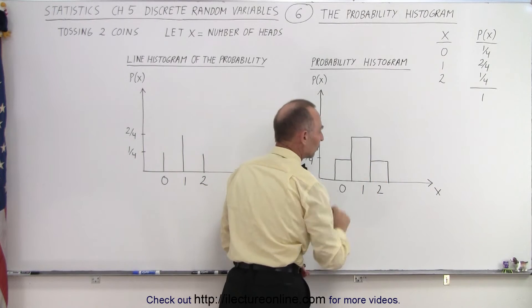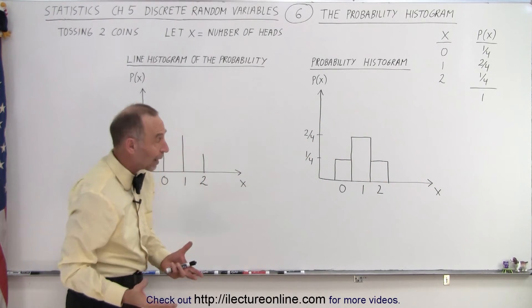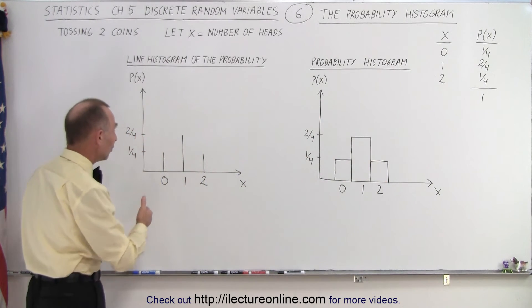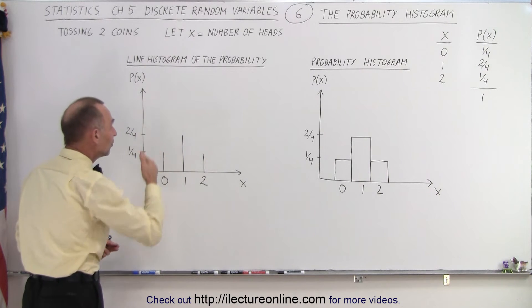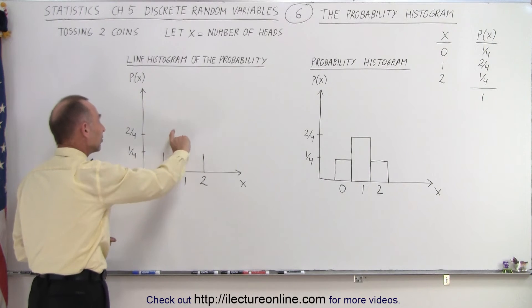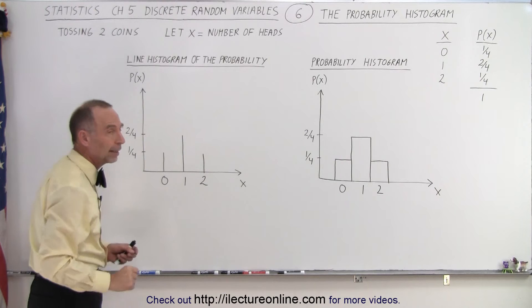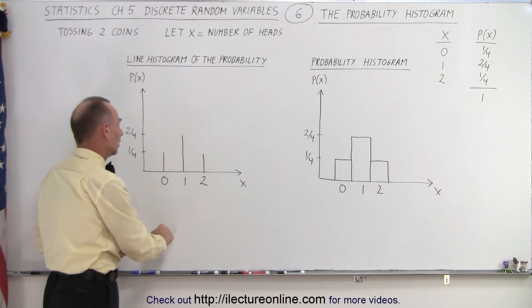Sometimes we see something that looks like this, where we have vertical lines. You can see again that the height of each line corresponds to the probability of the variable x, x being either 0 heads, 1 head, or 2 heads.